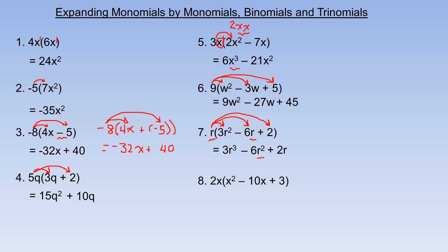For number 8, 2x times x squared is 2x cubed. Distributing the 2x by negative 10x in the middle gives minus 20x squared. And lastly, 2x times 3 is plus 6x — 2 times 3 is 6, and there's a single x in that product, so it's 6x on the very end. And that's the end of the tutorial.